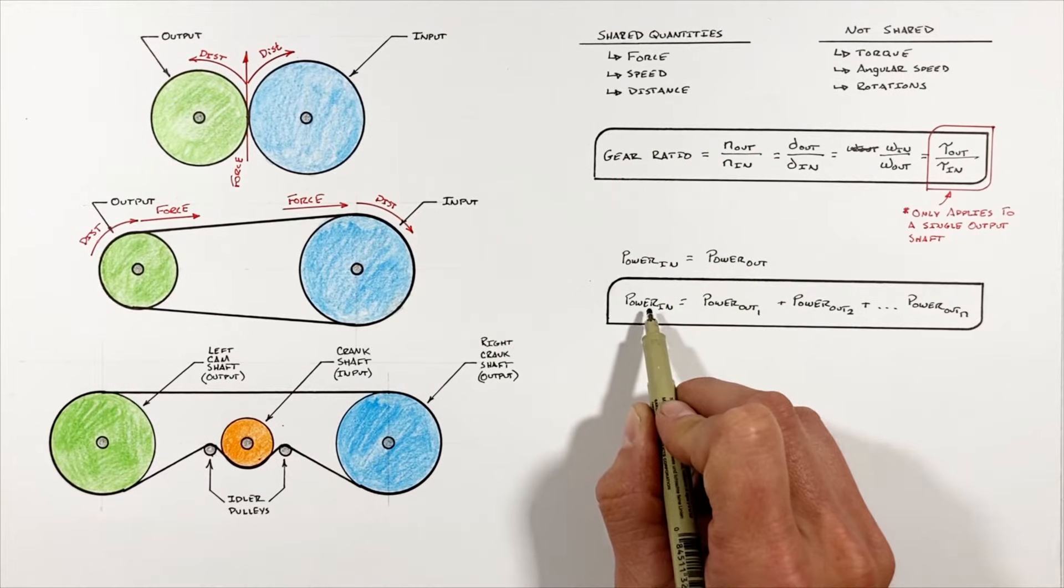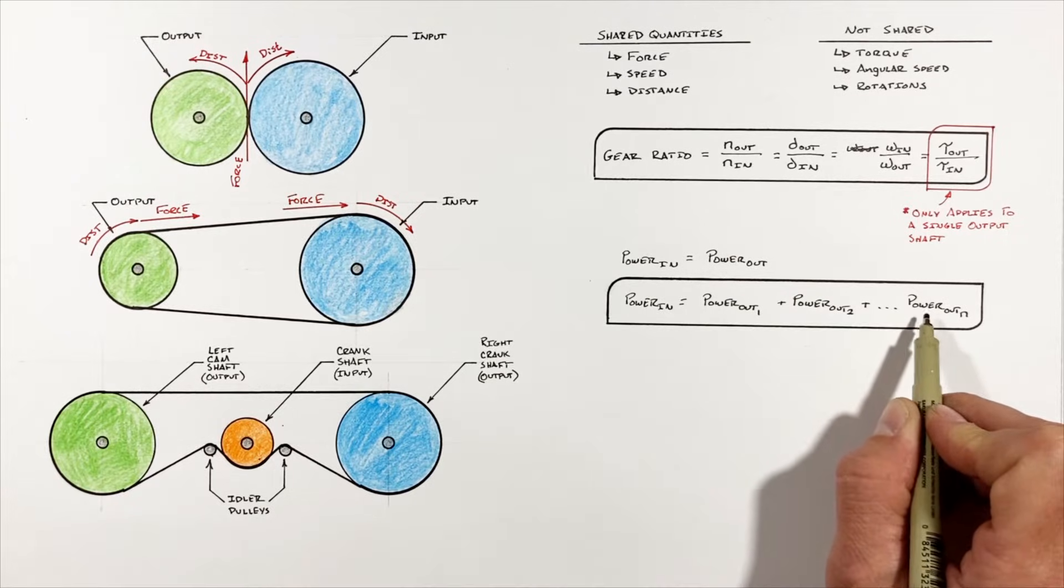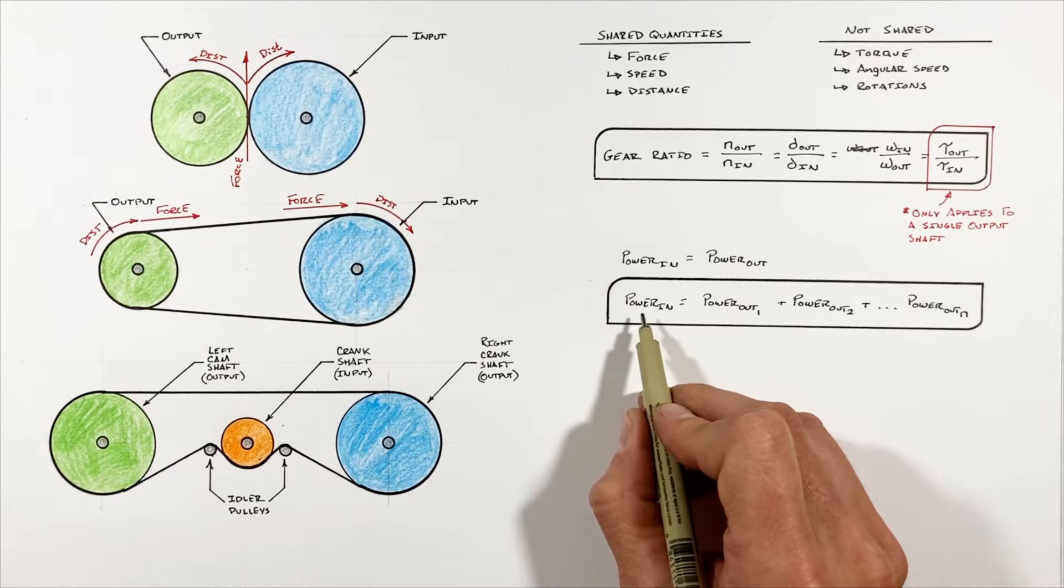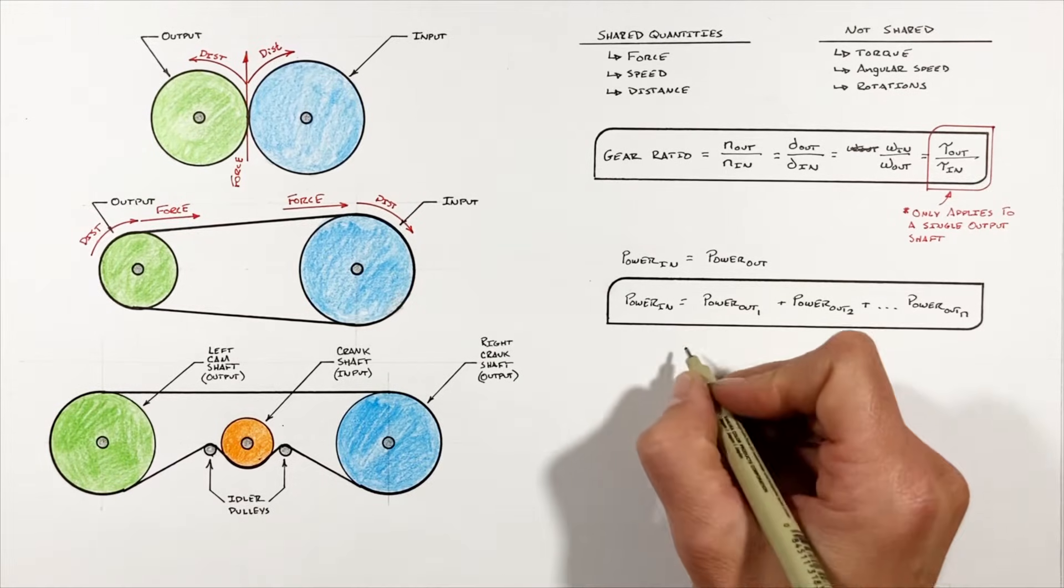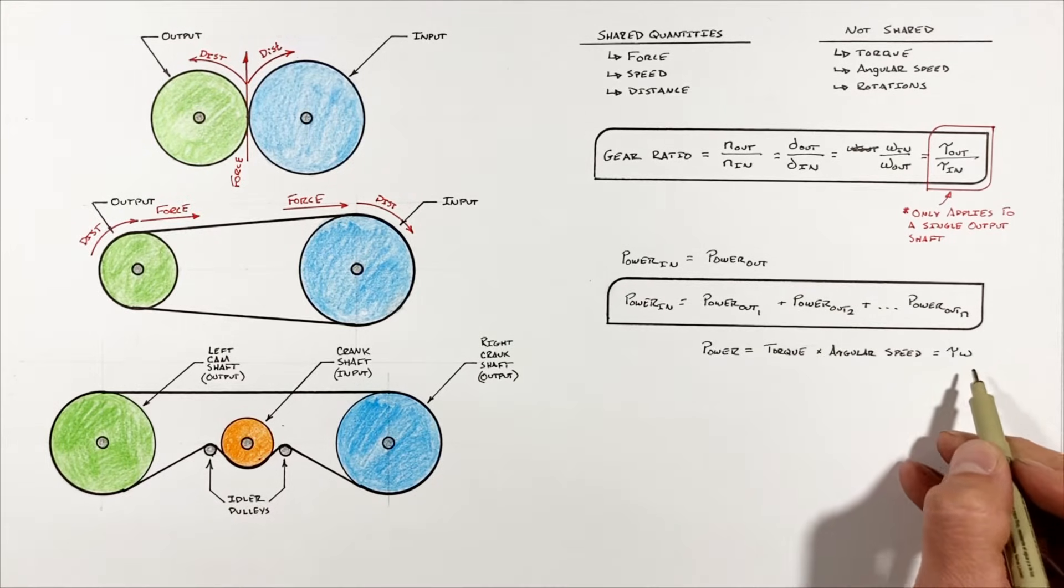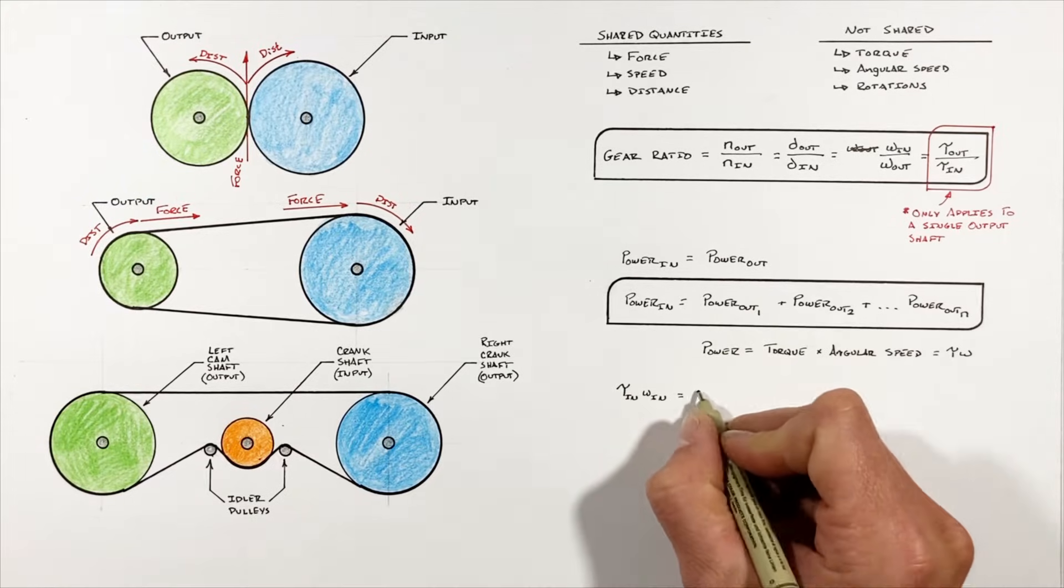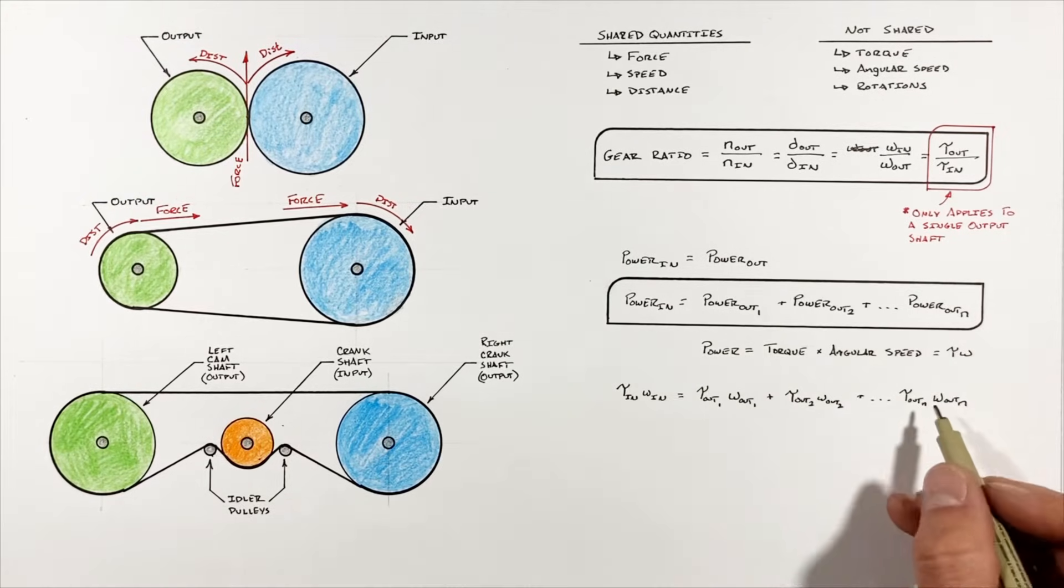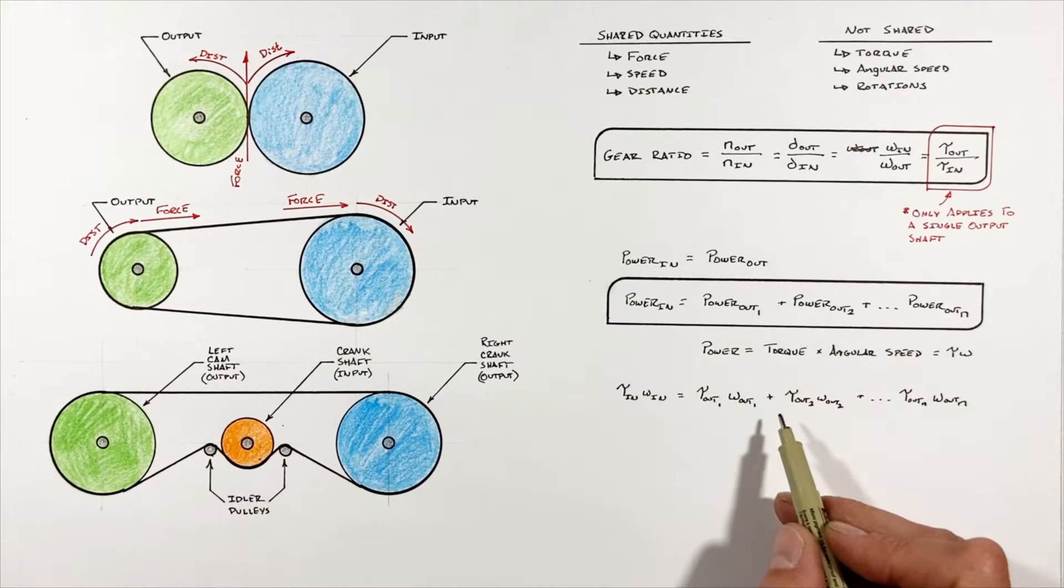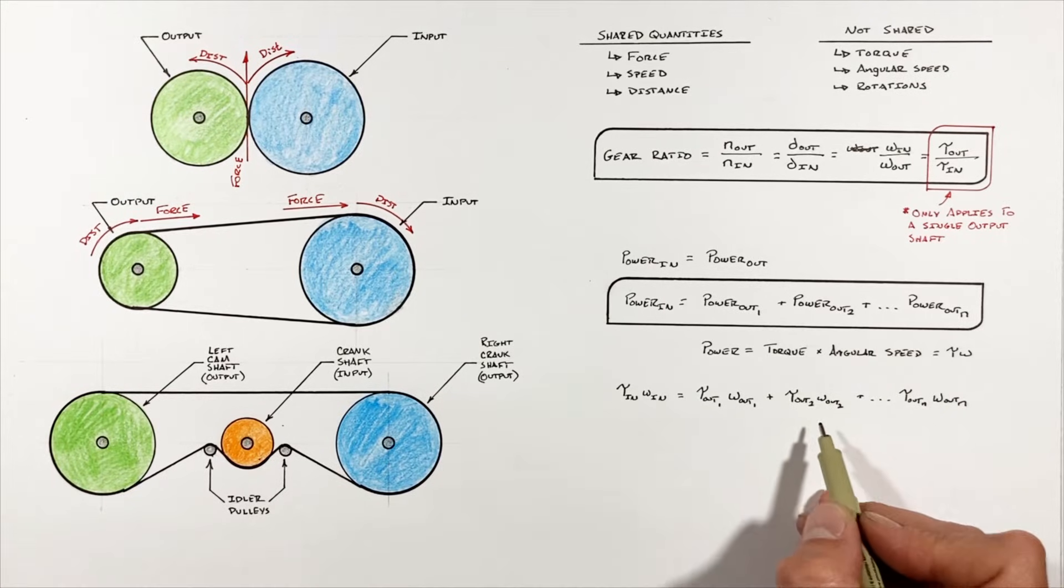And we have to look at the total power in as being equal to the sum of all of the powers out at all of the different output shafts. Now if we want to make this look a little bit more useful, we can expand out our expression for power, where power is equal to torque times angular velocity or angular speed. And that leaves us with this, relating the torque and angular velocity at the input to the torque and angular velocity at all of the output shafts. It's not a pretty equation, but that's all we get.